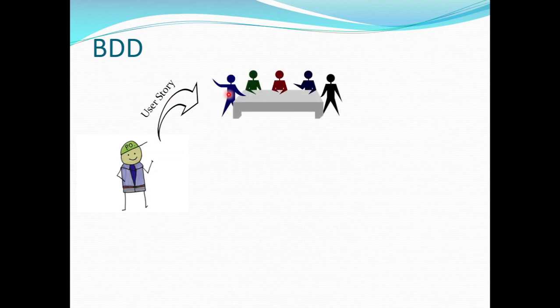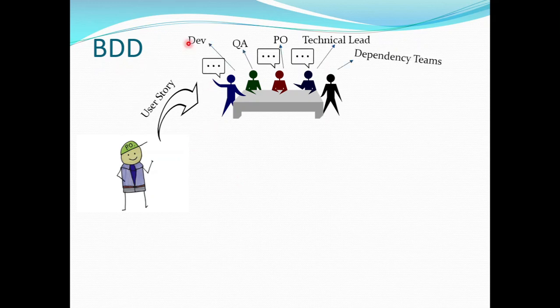In this, all the teams will collaborate to discuss about this particular user story. To be precise, we have the three amigos mainly involved in this meeting, which are the dev team, QA team, and the PO.